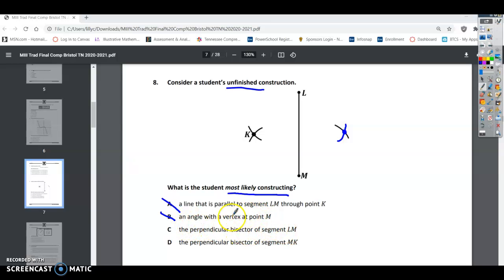A perpendicular bisector, so that's what I think it is. And a perpendicular bisector of segment LMK. So not LMK, but LM. So a perpendicular bisector would be a line that direction.